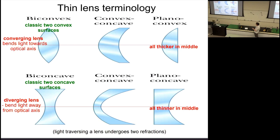The classic converging lens is thicker in the center and thinner at the edges — that's the key characteristic. The classic diverging lens is thinner at the center and thicker at the edges. The classic converging lens has two convex surfaces; the diverging lens has two concave surfaces. When light passes into the lens it's refracted once, and when it passes out it's refracted a second time.